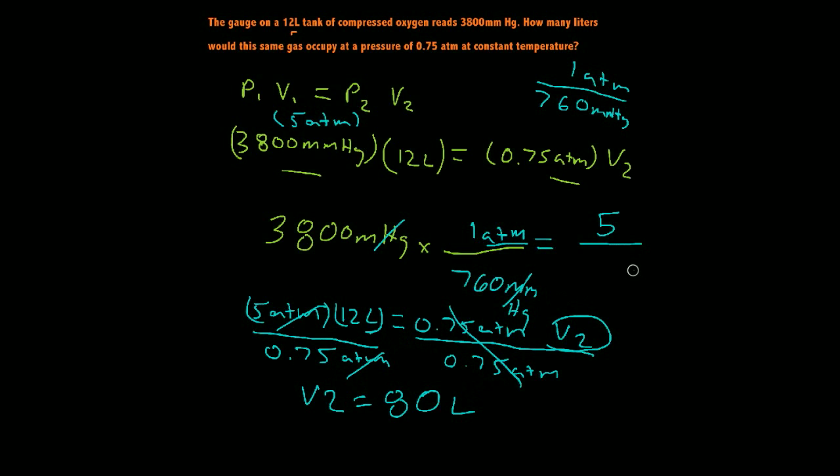Basically what I did write down here, though, is I took this formula P1V1 equals P2V2. I wanted to solve for V2, so I divided P2 by both sides.